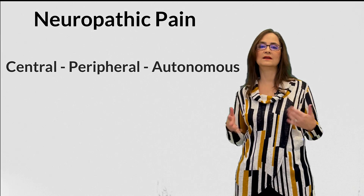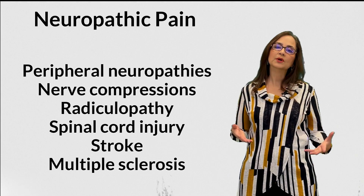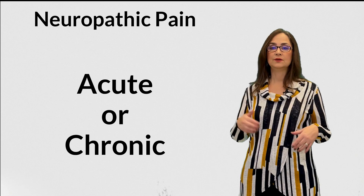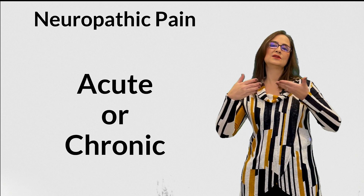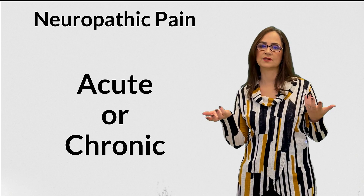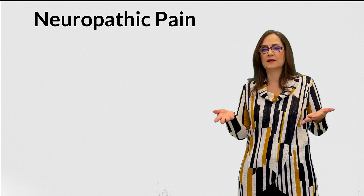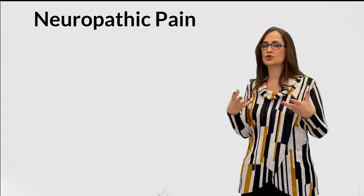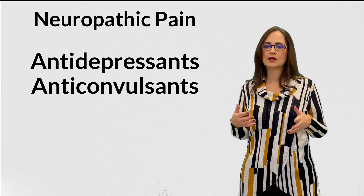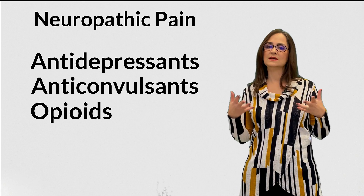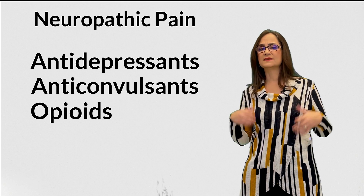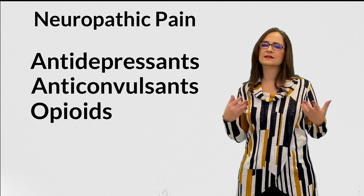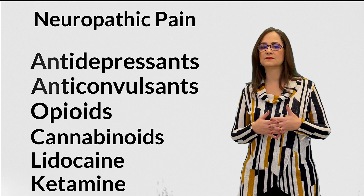Examples of conditions that cause neuropathic pain are peripheral neuropathies, nerve compressions, radiculopathy, spinal cord injury, stroke, and multiple sclerosis. Neuropathic pain can be acute if the injury starts abruptly, or it can slowly progress in case of a nerve compression or neuropathies. The treatment for neuropathic pain is different from nociceptive pain. It is treated with agents that reduce the activity of nerves and neurons — usually antidepressants and anticonvulsants. Opioids are sometimes combined with these drugs. Acetaminophen and anti-inflammatories rarely have effect on neuropathic pain, but cannabinoids, lidocaine, and ketamine have shown some benefit.